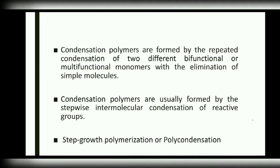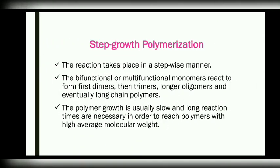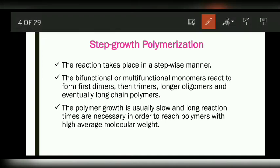This condensation polymerization is also known as step growth polymerization or polycondensation. The name itself indicates that the reaction takes place in a stepwise manner. The bifunctional or multifunctional monomers react to form first dimers, then trimers, tetramers, oligomers, and eventually long chain polymers. Usually this is a slow process and it takes longer reaction time to build a polymer molecule with high average molecular weight.